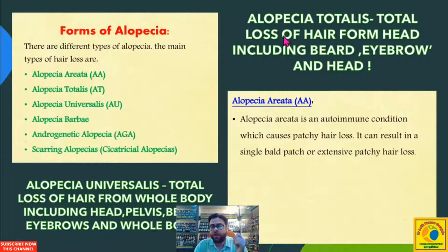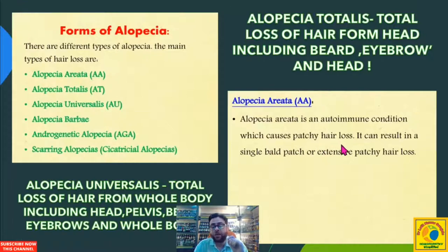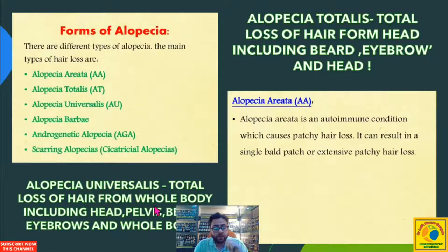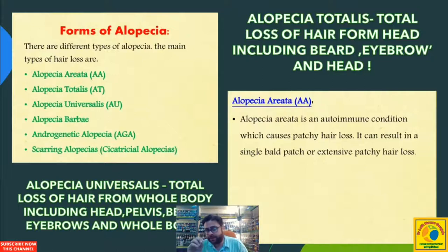To summarize the definitions: alopecia totalis means total loss of hair from the head including the beard and eyebrows. Alopecia areata is an autoimmune condition which causes patchy hair loss, resulting in a single bald patch or extensive patchy hair loss. Alopecia universalis is total loss of hair from the whole body, including the head, pelvis, beard, eyebrows, and all other parts.